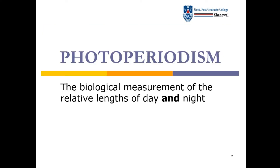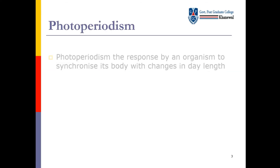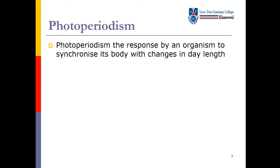Today we will discuss photoperiodism. What is photoperiodism? The biological measurement of the relative lengths of day and night is termed as photoperiodism. Photo means light, periodism means period of light. Photoperiodism is the response by an organism to synchronize its body with changes in day length.